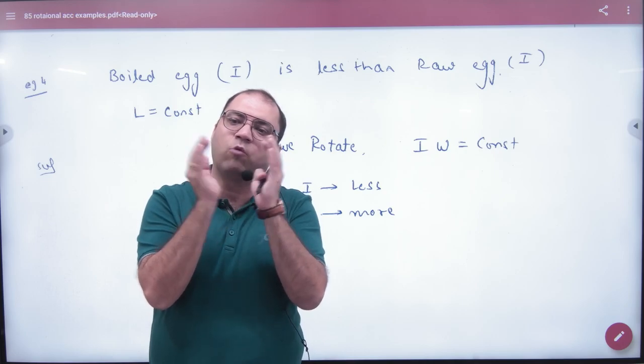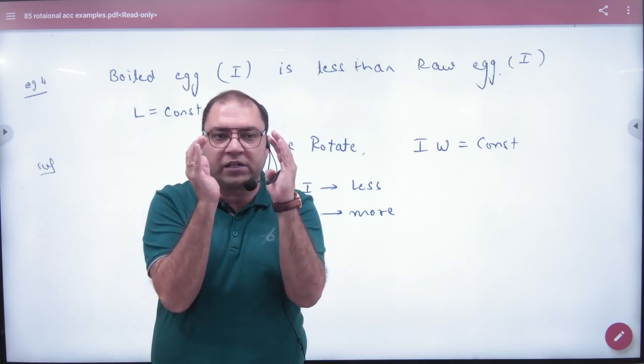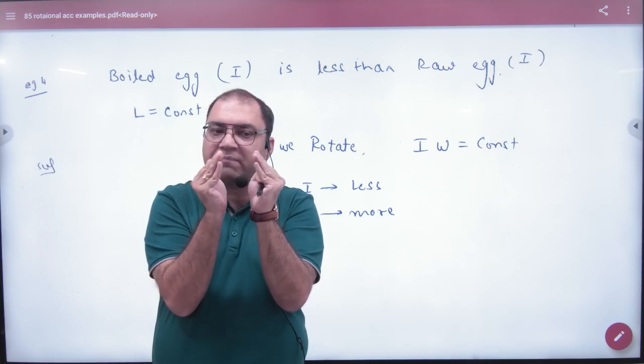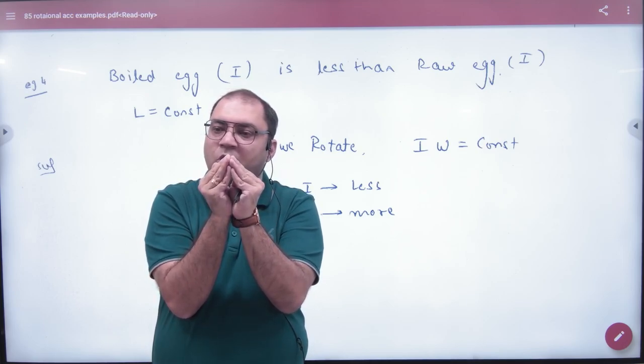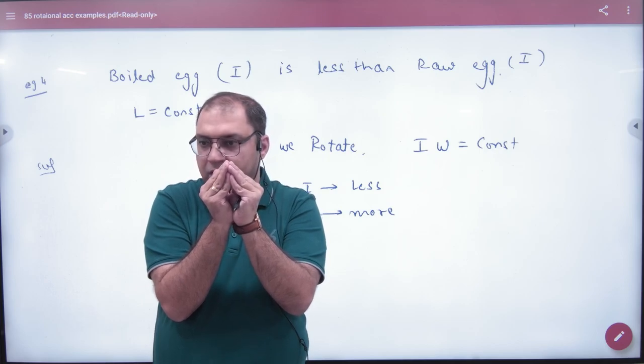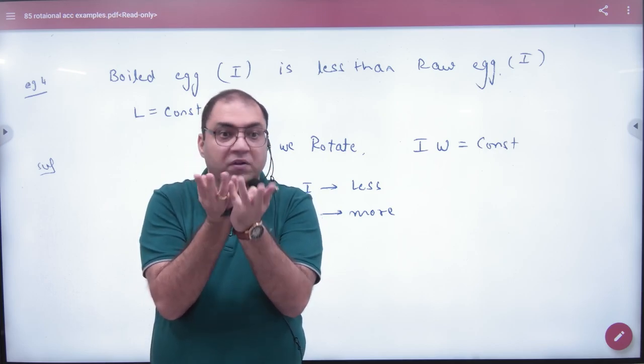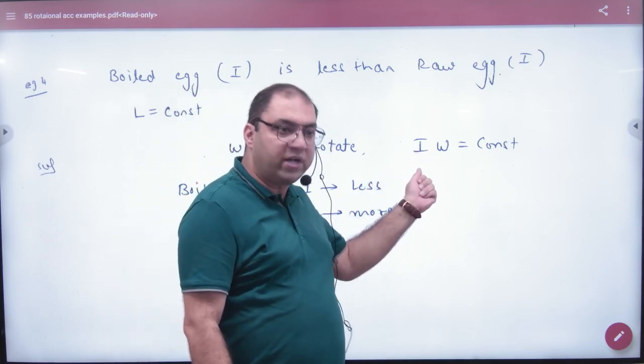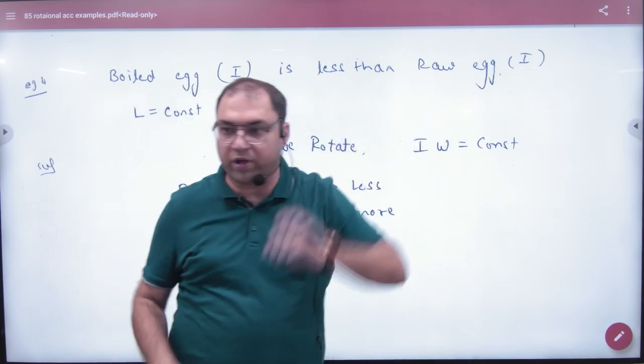The boiled egg will get tight, so all particles go along the axis, the overall moment of inertia becomes less. I becomes less, L constant. L is I into omega. If I becomes less for boiled egg, then omega will be more, it will be faster.